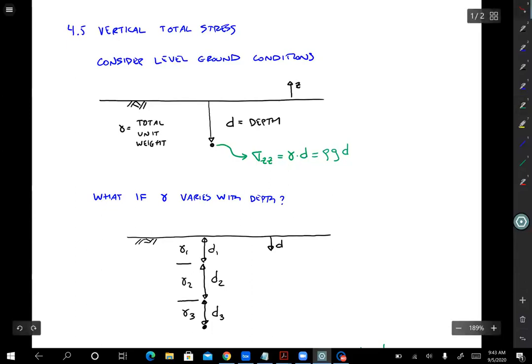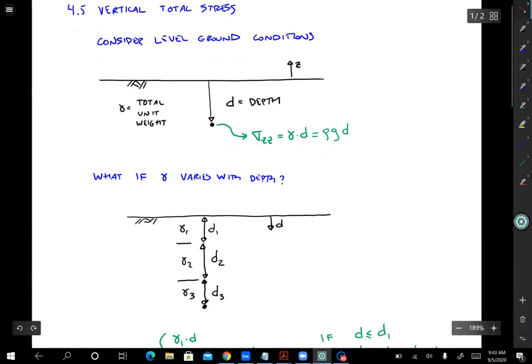Now, a lot of the time we have layering. So what if unit weight varies with depth? This is a really common occurrence. We have maybe layer one, two, and three, and we want to compute the vertical total stress at a depth down here that's equal to d1 plus d2 plus d3.